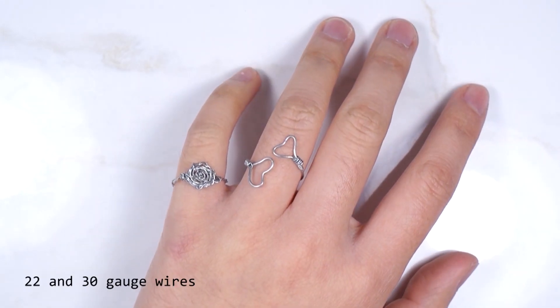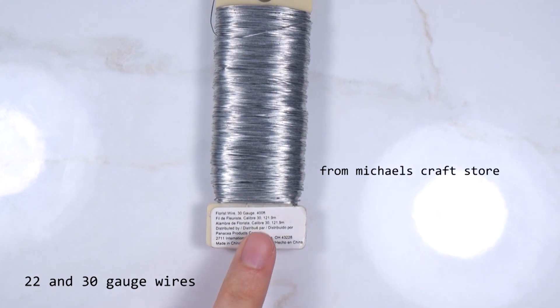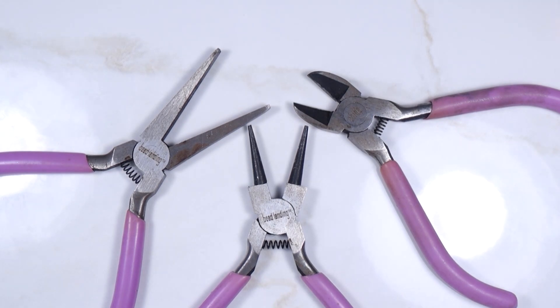You will need a 22 and a 30 gauge wire, but of course you can use any gauge wire you want. I'm using floral wire. A cylinder that is close to your finger width and these three pliers.